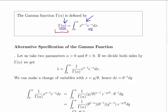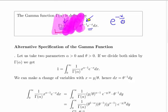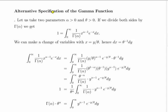Notice that in the gamma function definition we have e to the minus X, whereas in the probability density function we have e to the minus X divided by theta. So what we need is an equivalent of this expression suited for e to the minus X divided by theta. This is an alternative specification — or extension — of the gamma function.